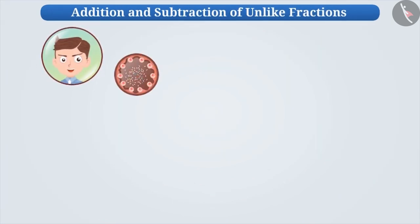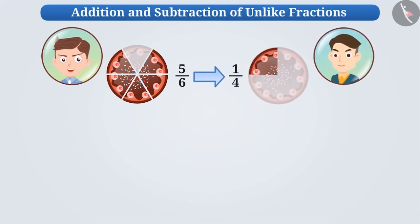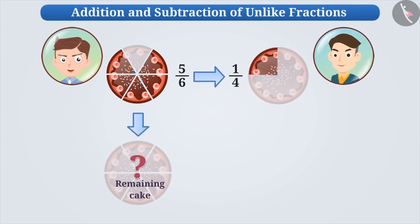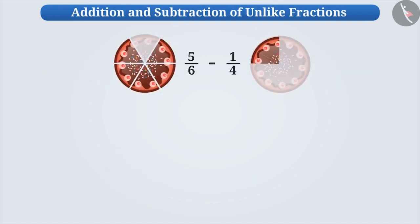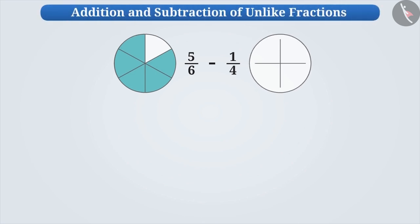Now suppose you have five by six parts of a cake, out of which you have to give one by four parts of cake to your friend. How will you find the remaining part of cake? In order to find this, we need to subtract one by four from five by six. First, we make two equal circles to represent the cake. To represent the fraction five by six, we will divide the first circle into six equal parts and shade five parts. Similarly, to represent the fraction one by four, we will divide the second circle into four equal parts and shade one part.